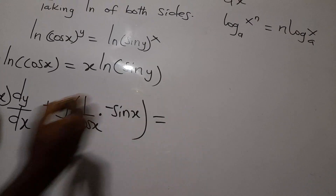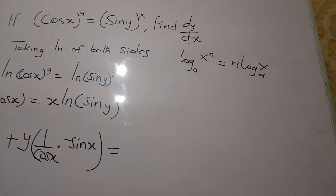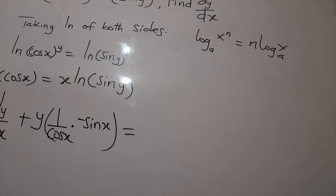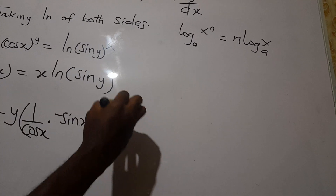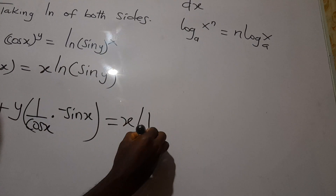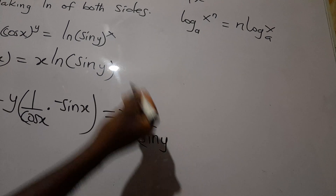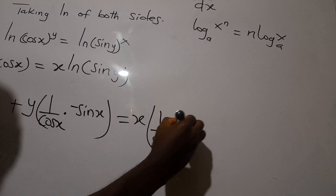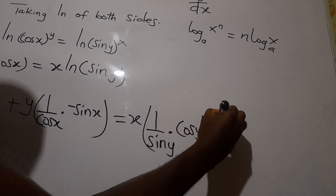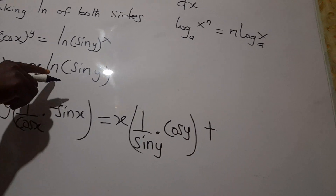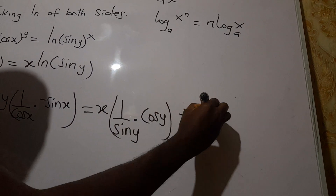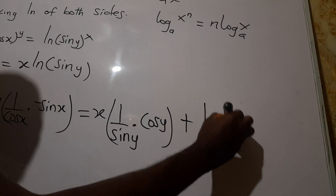On the right side, we apply the same product rule. We keep x and differentiate ln(sin y): reciprocate to get 1/sin y, then differentiate sin y and multiply — that gives cos y·(dy/dx). Then plus, we keep ln(sin y) and differentiate x, which gives 1, so we add ln(sin y).